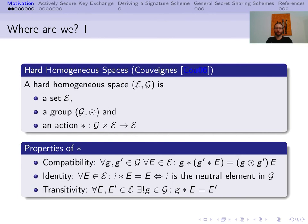Let us first set the stage. We will be moving in the context of hard-homogeneous spaces today. The concept of hard-homogeneous spaces was first introduced by Couveignes in 2006. Such a space consists of a set E and a group G combined with an action asterisk, that combines an element of E with an element of G and produces another element of the set E. The mapping asterisk has some important properties that we make use of in this work.